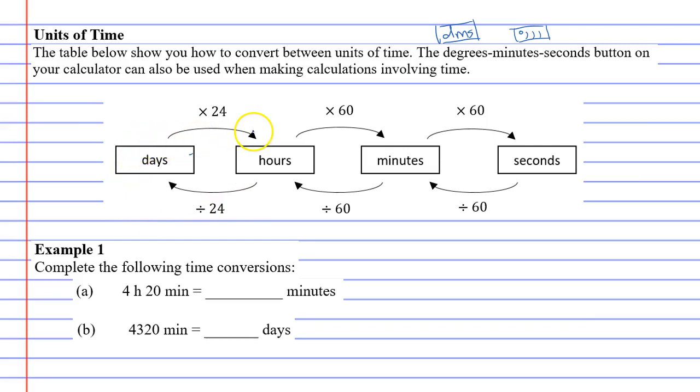When you go from the bigger units down to the smaller units toward seconds, you multiply. And when you go in the other direction, you divide.